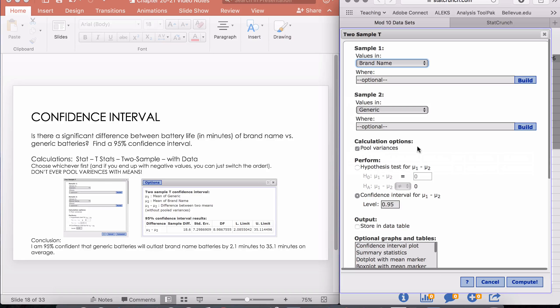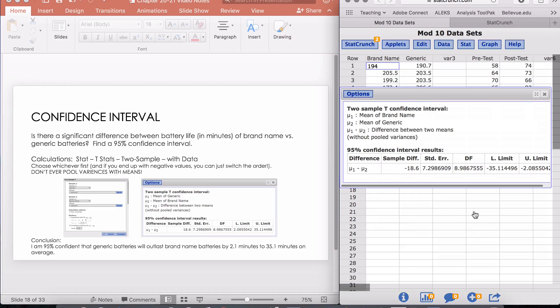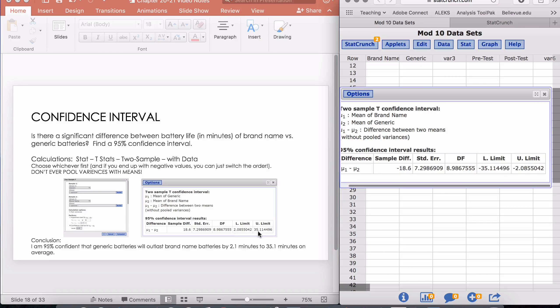Right here is very important: I have to uncheck pool variances. It's a very complicated and in-depth discussion about pooling or not pooling. For the sake of an intro stats course, just take my word for it that we will not be pooling our variances anytime we are dealing with means. If I click Compute, I end up with the same two values that I have here, but these are positive and these are negative.